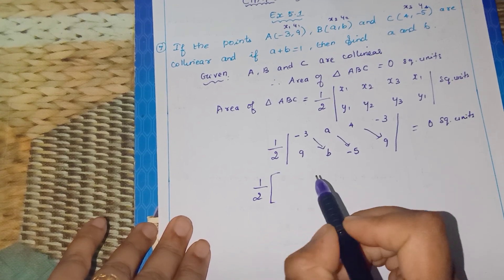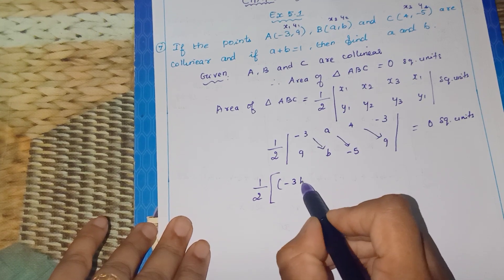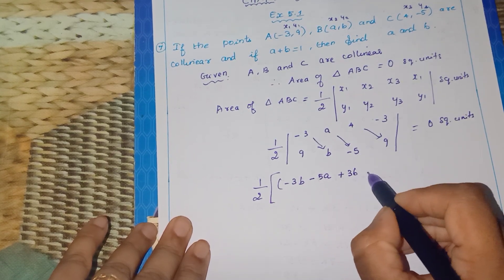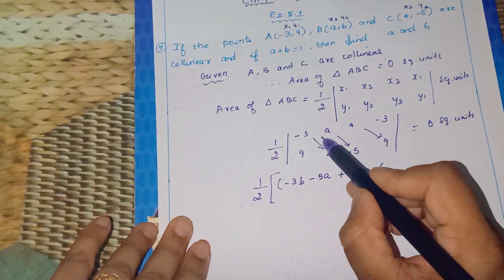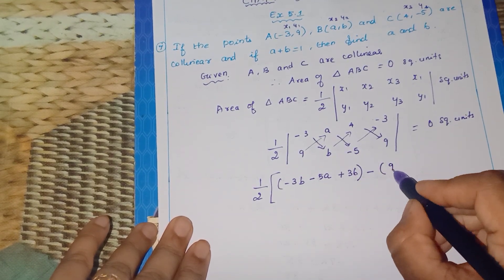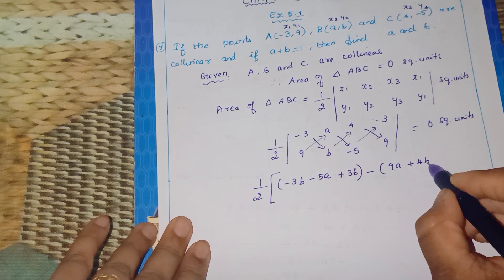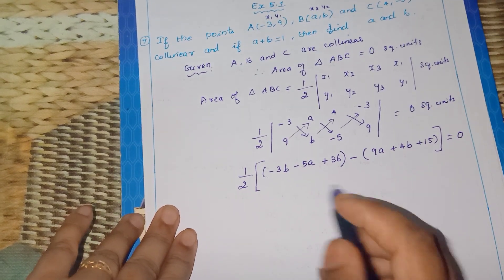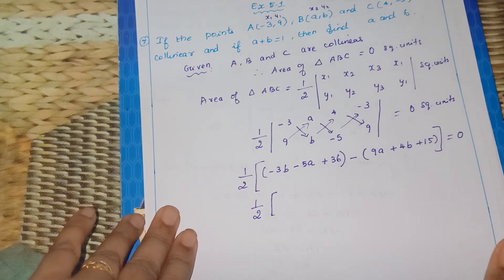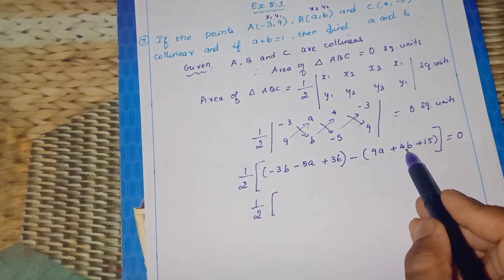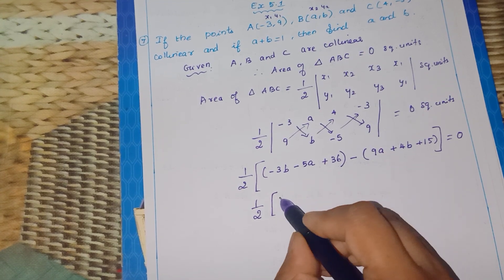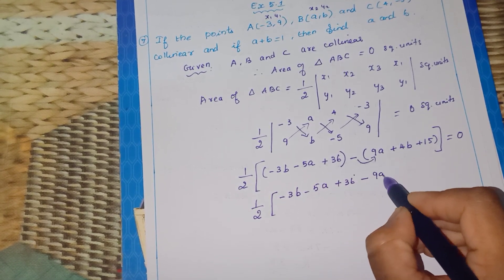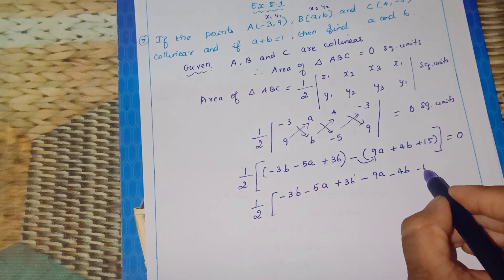Now multiply using the arrow mark method. Half into: (-3)(B - (-5)) + A((-5) - 9) + 4(9 - B) equals 0. Expanding: -3B - (-15) - 5A + 36 - 9A - 4B + 15, which simplifies step by step.